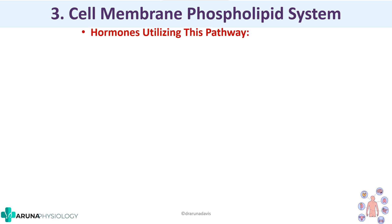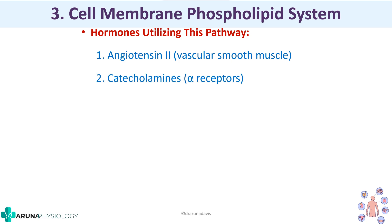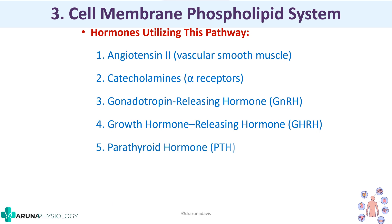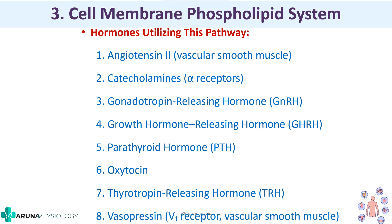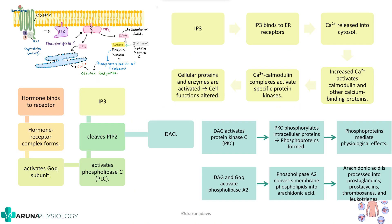Many hormones utilize the cell membrane phospholipid pathway, including angiotensin II (especially on vascular smooth muscle), catecholamines, gonadotropin releasing hormone, growth hormone, growth hormone releasing hormone, parathyroid hormone, oxytocin, thyrotropin releasing hormone, and vasopressin.